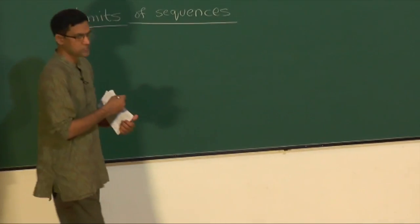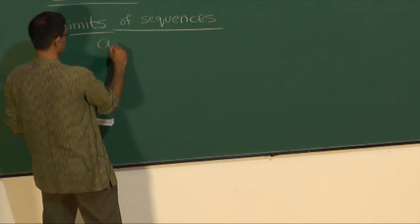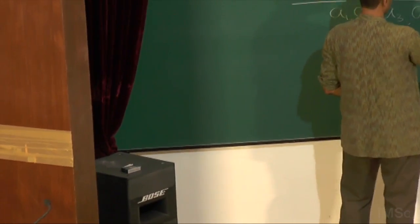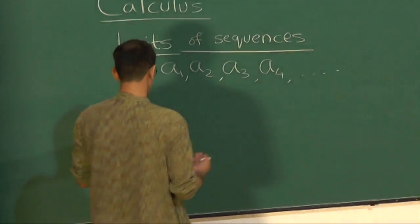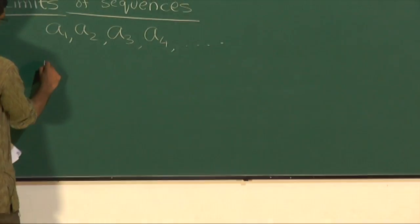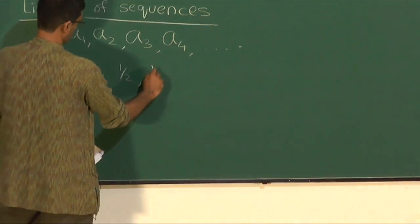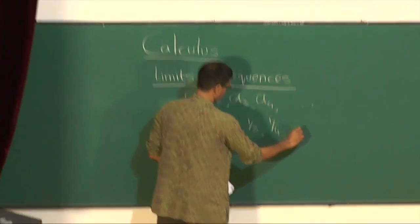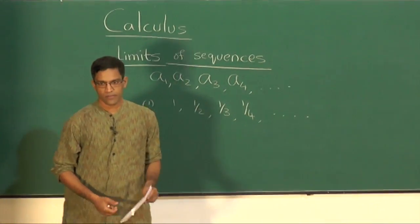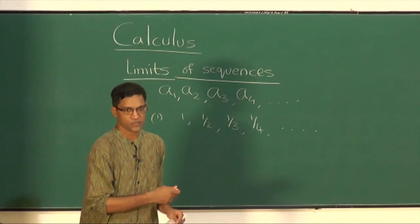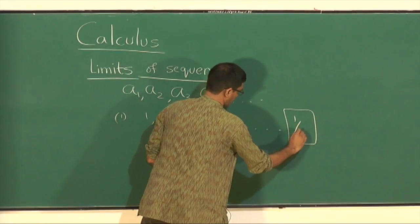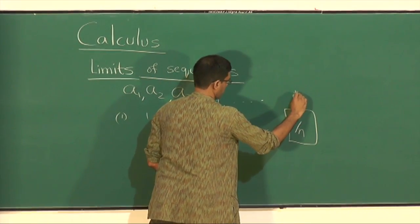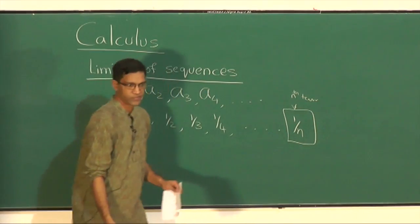What do I mean by a sequence? A sequence is just a list of numbers — a list of real numbers: a1, a2, a3, a4, and so on. An infinite list of numbers is what we usually call a sequence. The most obvious example: you could take 1, 1/2, 1/3, 1/4, and so on. The nth term of this sequence is given by the formula 1/n.